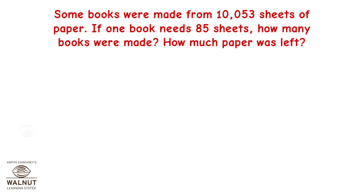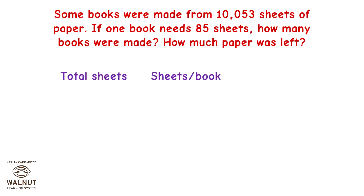We know the total number of sheets and we know how many sheets are in one book. We have to find how many books there are in total. To do it, we divide the total sheets by the sheets per book — that gives us the total number of books. So let us write the division statement.